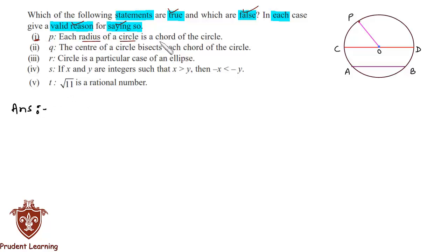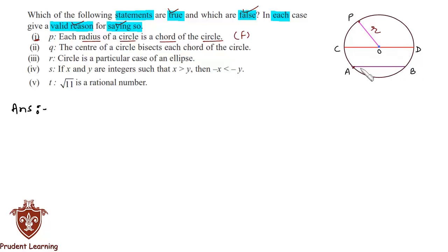The first statement: each radius of a circle is a chord of the circle. This statement is false because only one end of the radius is on the circle, whereas a chord must have both ends on the circle. I have already drawn a circle with one radius OP and two chords AB and CD. From this figure you can clearly see that both ends of the chord touch the circle, whereas only one end of the radius touches the circle.